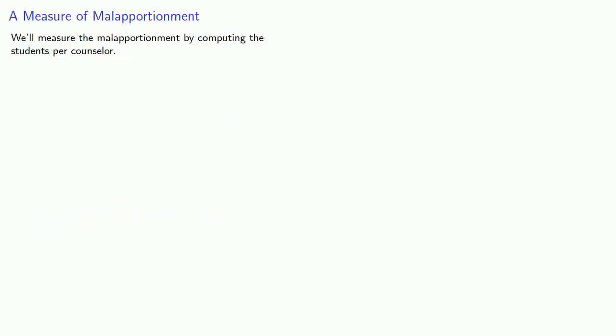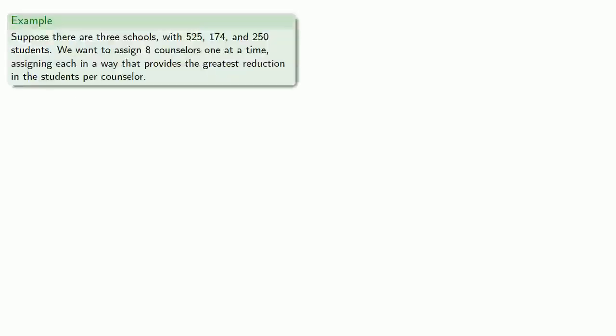Now let's measure the malapportionment by computing the students per counselor. The lower this number, the more time and effort each counselor can devote to individual students. Our goal should be to make these numbers as low as we possibly can given our resource constraint. So let's try our problem again, this time assigning eight counselors one at a time, assigning each in a way that provides the greatest reduction in the students per counselor.